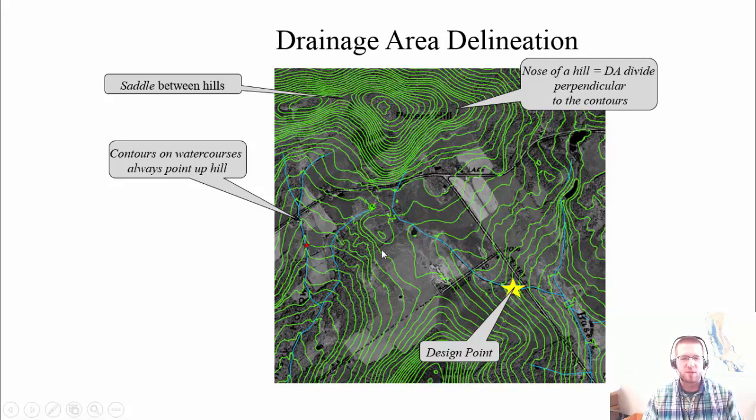You can look at the contour shapes to help you do your delineations. On watercourses, they always point uphill. See these contours kind of bend and make an arrow? They point uphill. On a nose of a hill, see there's no watercourses in this area, the contours point downhill. So in this watershed, you'd be coming up perpendicular to the contours, up to the top, across, and then back down.